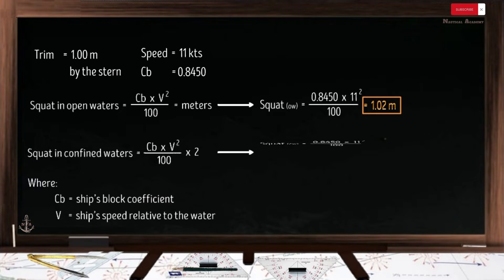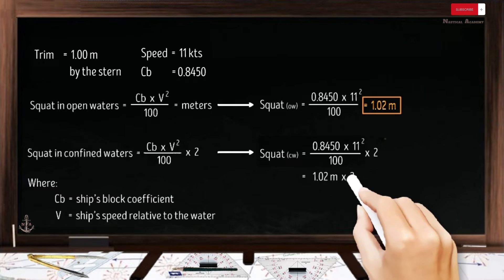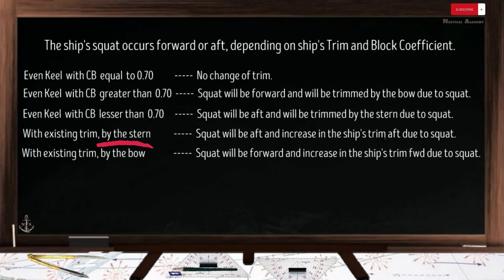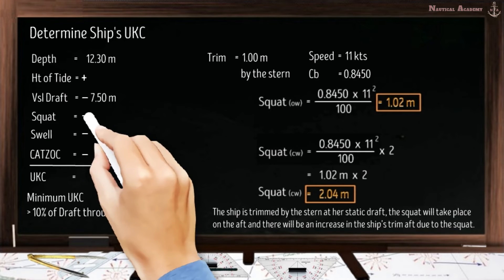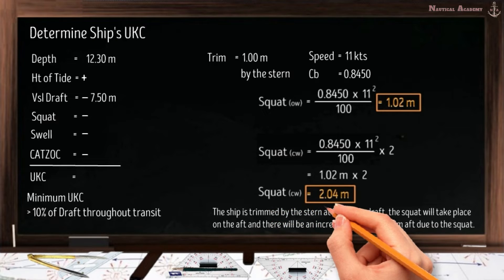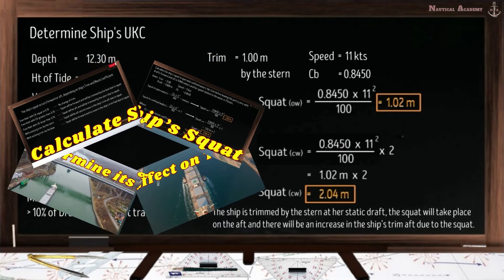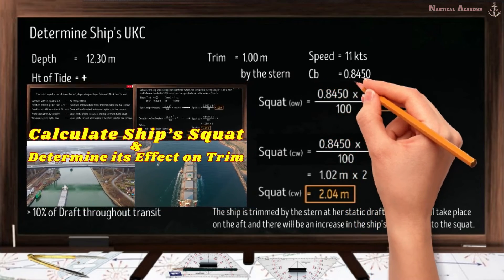For squat in confined waters, the formula multiplies the open water squat by 2: so 1.02 meters × 2 = 2.04 meters. Since the ship is trimmed by the stern, squat will take place at the aft, increasing trim aft and decreasing under keel clearance. That is why we subtract the ship's squat from the depth. Since we will be passing shallow water, we take the confined waters value: squat is 2.04 meters. The linked video also shows how to extract the block coefficient at a given draft using a hydrostatic table.